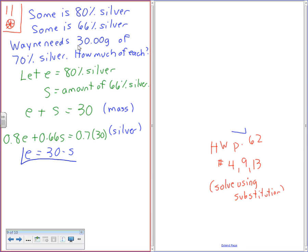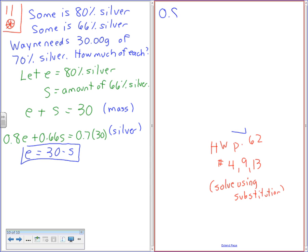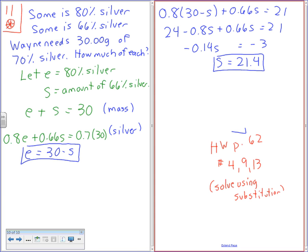I'm going to say that 0.8 times (30 minus S) plus 0.66S equals 21. 24 minus 0.8S plus 0.66S equals 21. Negative 0.14S equals negative 3. S equals 21.4. E equals 30 minus 21.4, E equals 8.6.